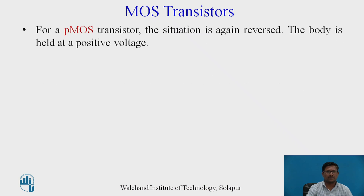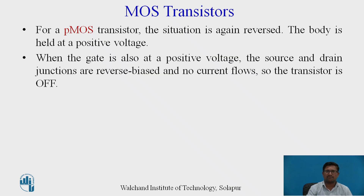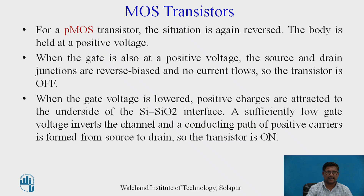For PMOS, the situation is reversed. The body is held at positive voltage; when the gate is also at positive voltage, the source and drain junctions are reverse biased and no current flows — the transistor is off. When the gate voltage is lowered below the threshold value, positive charges are attracted to the underside of the silicon oxide interface. A sufficiently low gate voltage inverts the channel and a conducting path of positive carriers is formed from source to drain, so the transistor turns on.